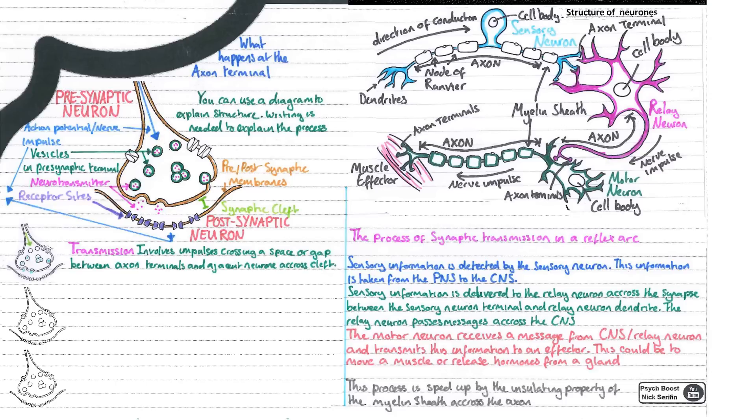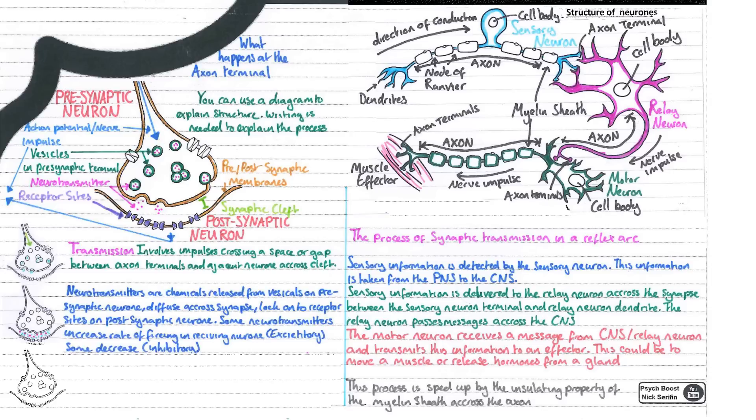The term synaptic transmission is important - this is impulses crossing a space, the gap between axon terminals, and sending the message to the adjacent neurons. As we said, neurotransmitters are the chemicals released from the vesicles on the pre-synaptic neuron. You can see in my little diagram some neurotransmitters being released.